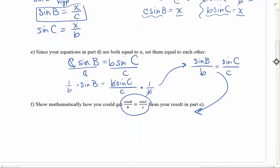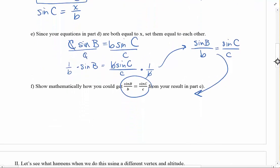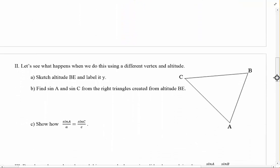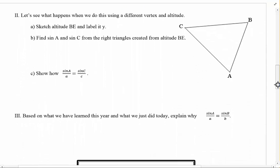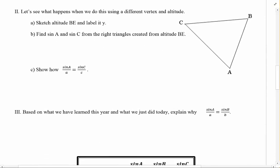All right, well why on earth did we do all that? It looks like we just moved some stuff around because you told us to. Well yeah, that's true. We did just move some stuff around because I told you to. But there's a reason. If we do that, I can get the same thing to work out for A and C and not just B and C. So let's sketch altitude BE.